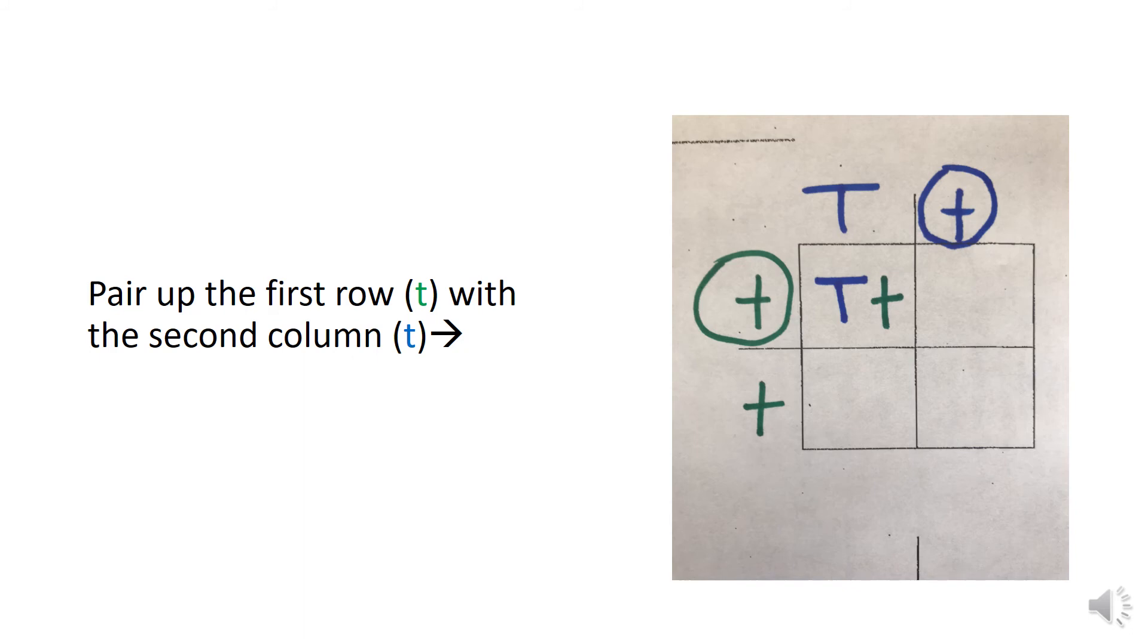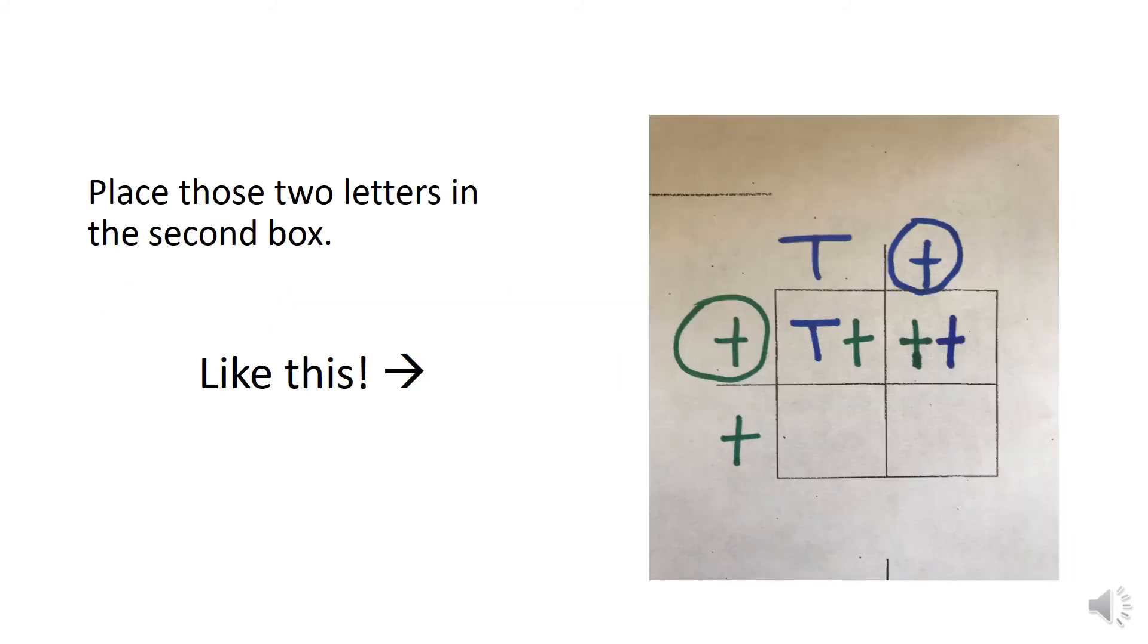Now it's time to pair up the first row lowercase green t with the second column lowercase blue t. Place those two letters in the second box.